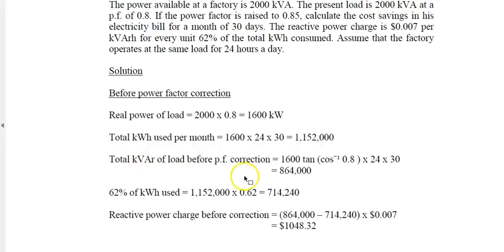The total kVAR of the load before power factor correction is 1600 tangent of the angle times 24 hours times 30 days, which equals 864,000 kVAR. 62% of the total units consumed is 714,240, which is lower than the actual kVAR. Therefore, there is a reactive charge because the excess times 0.07 cents gives the amount to pay. This is the reactive power charge before correction.